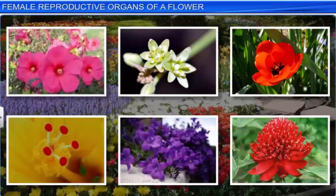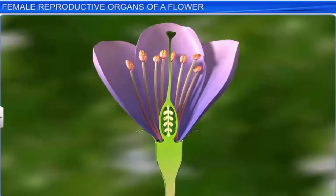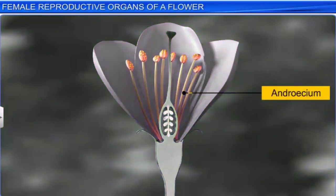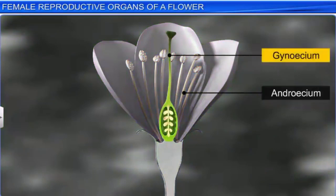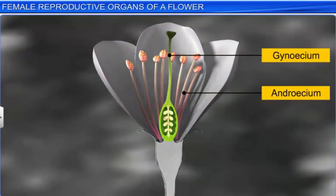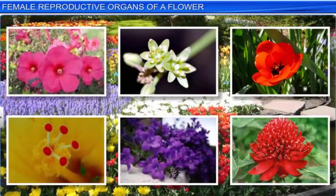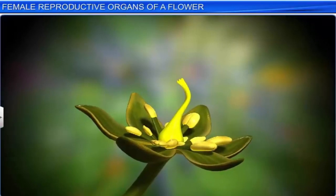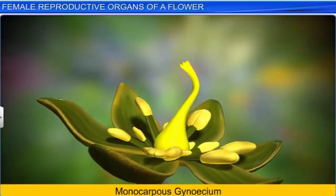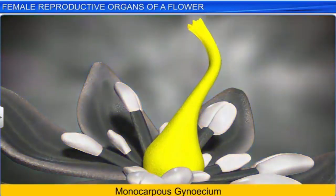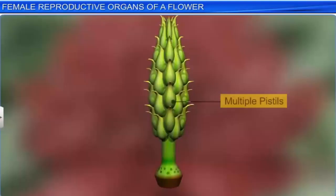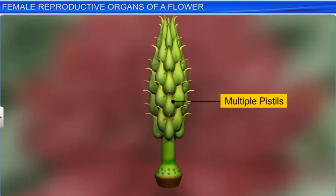Flowers are one of the most fascinating sights to behold. Incidentally, flowers also happen to be the site of sexual reproduction, as they contain the androecium and gynoecium — the male and female reproductive organs of a plant. You can see many variations in the gynoecium of different flowers. For example, the gynoecium can be monocarpous, consisting of a single pistil or carpel, or it may be multicarpous, in which case we see several pistils in a single flower.